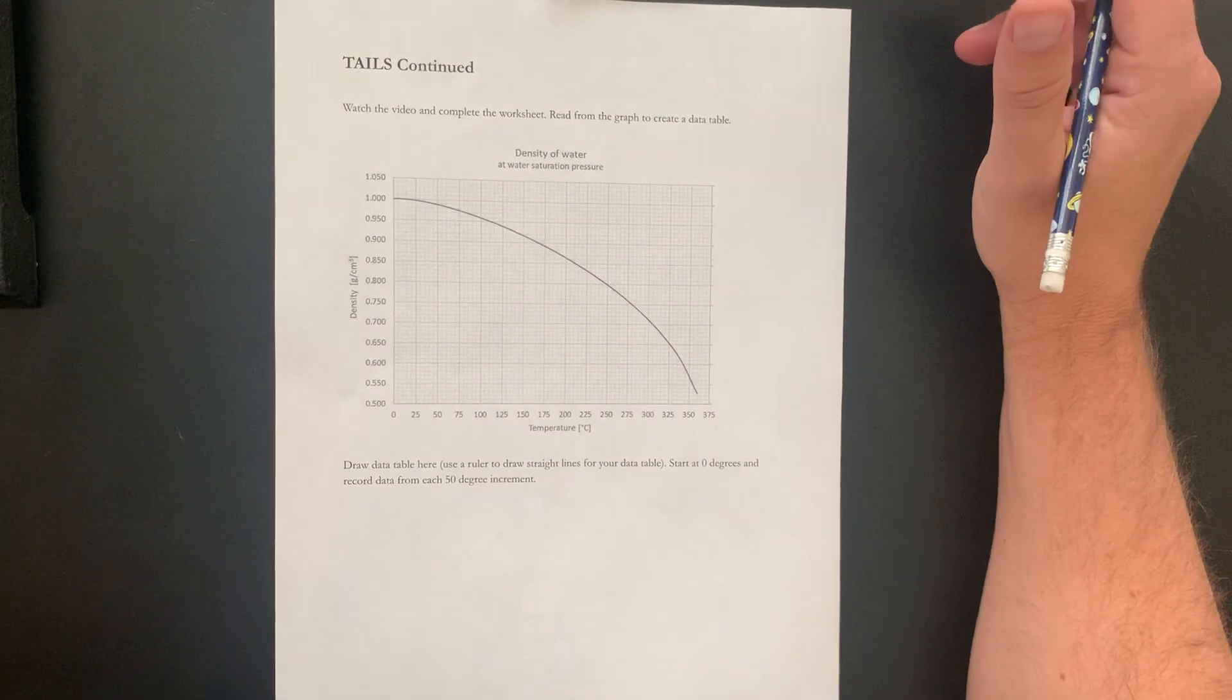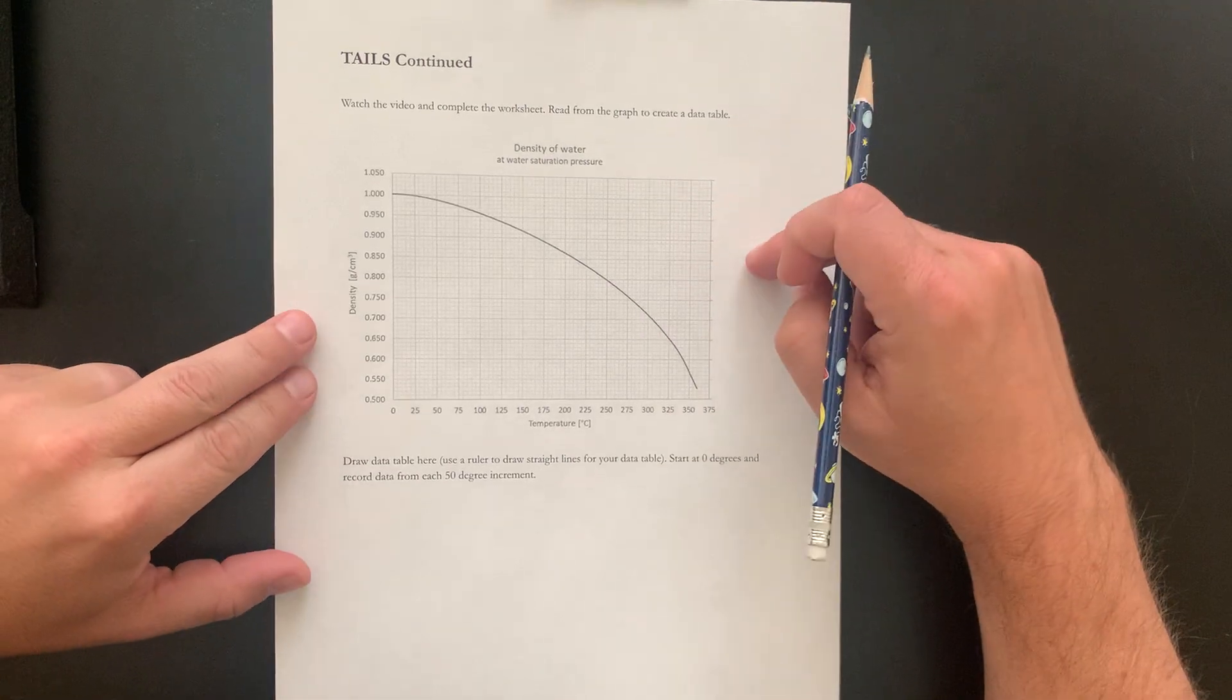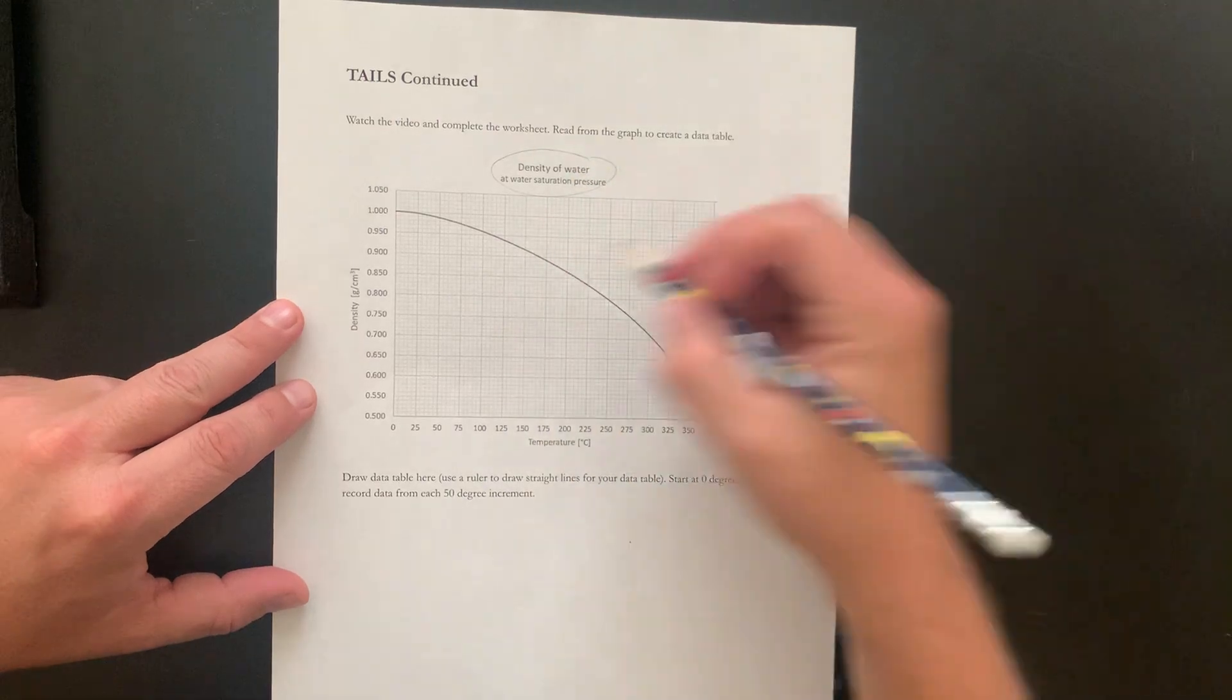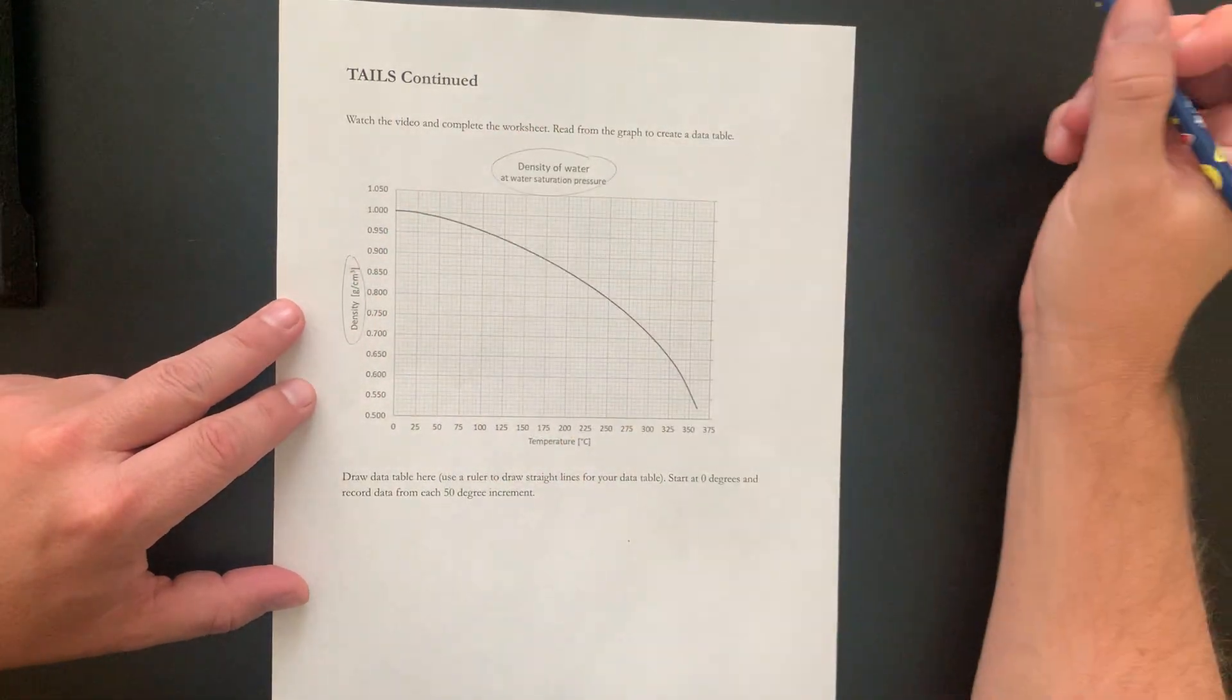And what you'll see on this paper is that I've already got a graph. The graph is already done and it's got all the things we need. It's got a title. It's got labeled axes.